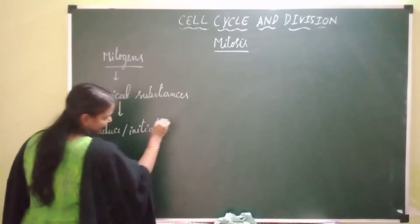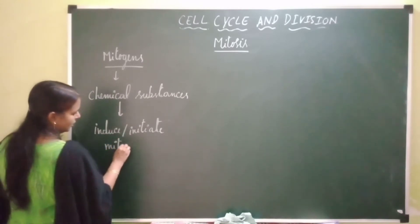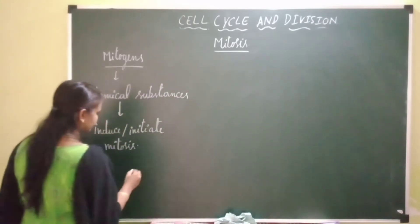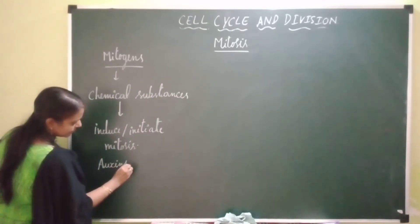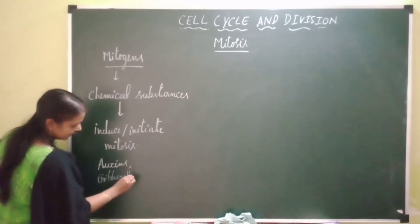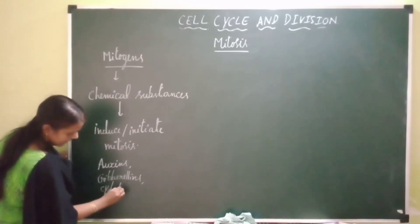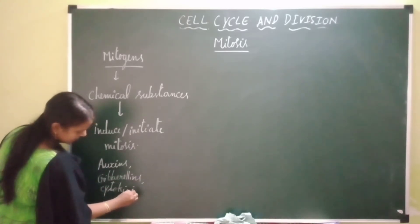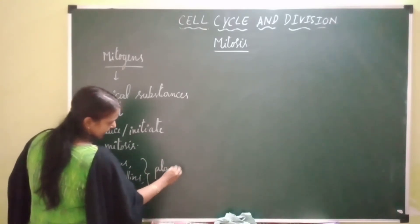Let's see some of the chemical substances that initiate or induce mitosis. For example, auxins, gibberellins, and cytokinins are the mitogens — these are the chemical substances that induce mitosis in case of plant cells.